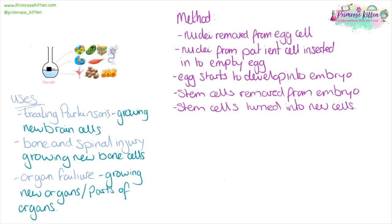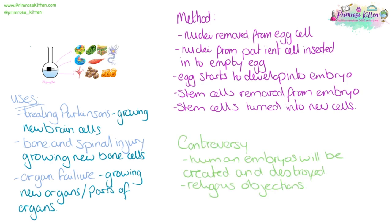If we want to make stem cells, then we take a nucleus out of an egg cell, take a nucleus from the patient's cell and insert that into the empty egg. The egg can then start to develop into an embryo. From this embryo, the stem cells are then removed and turned into new cells. This does come with quite a lot of controversy because human embryos are going to be created and then destroyed, and there were lots of religious objections to this — people saying that life starts when embryos are created and objecting to the destruction of embryos.